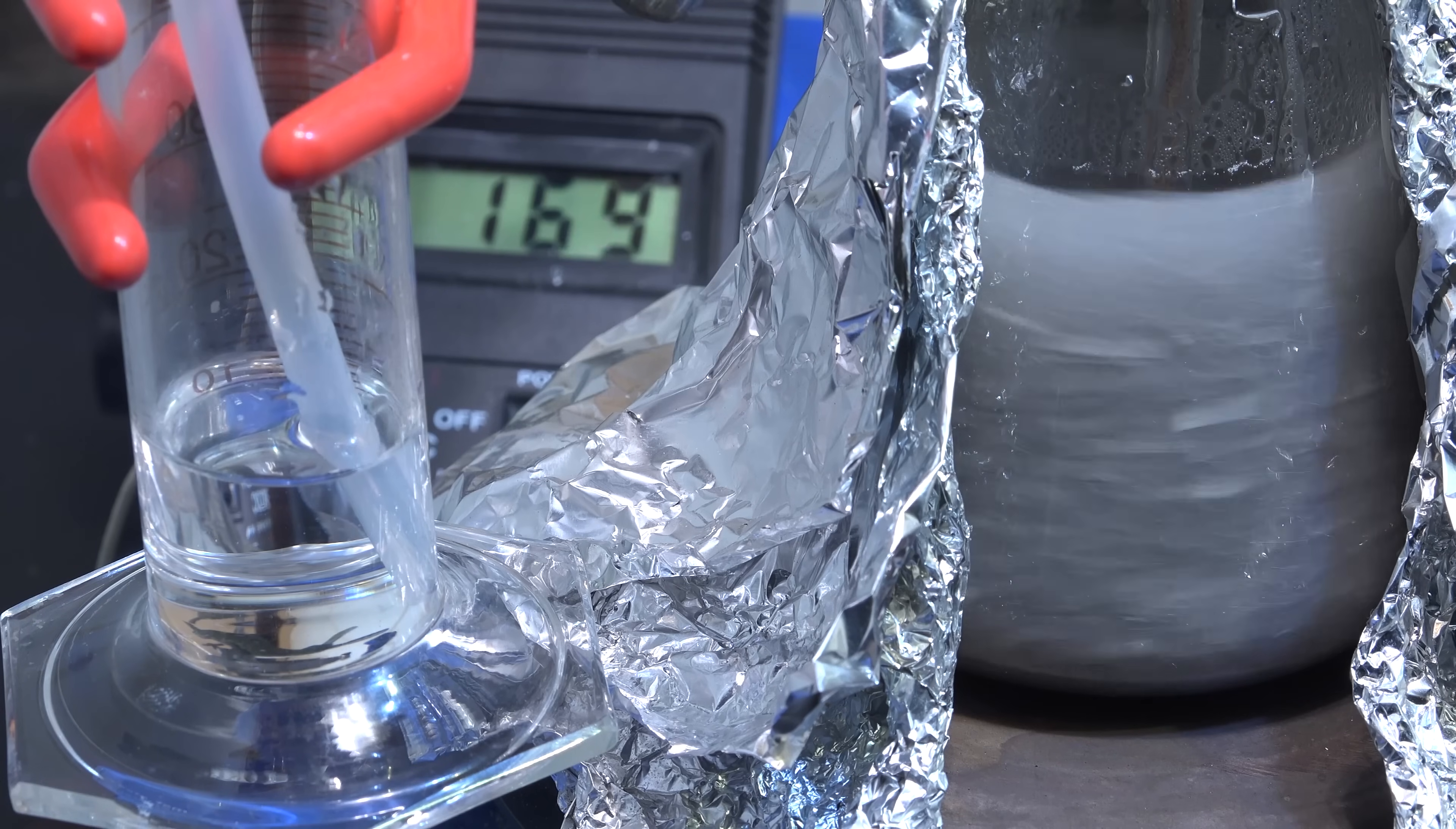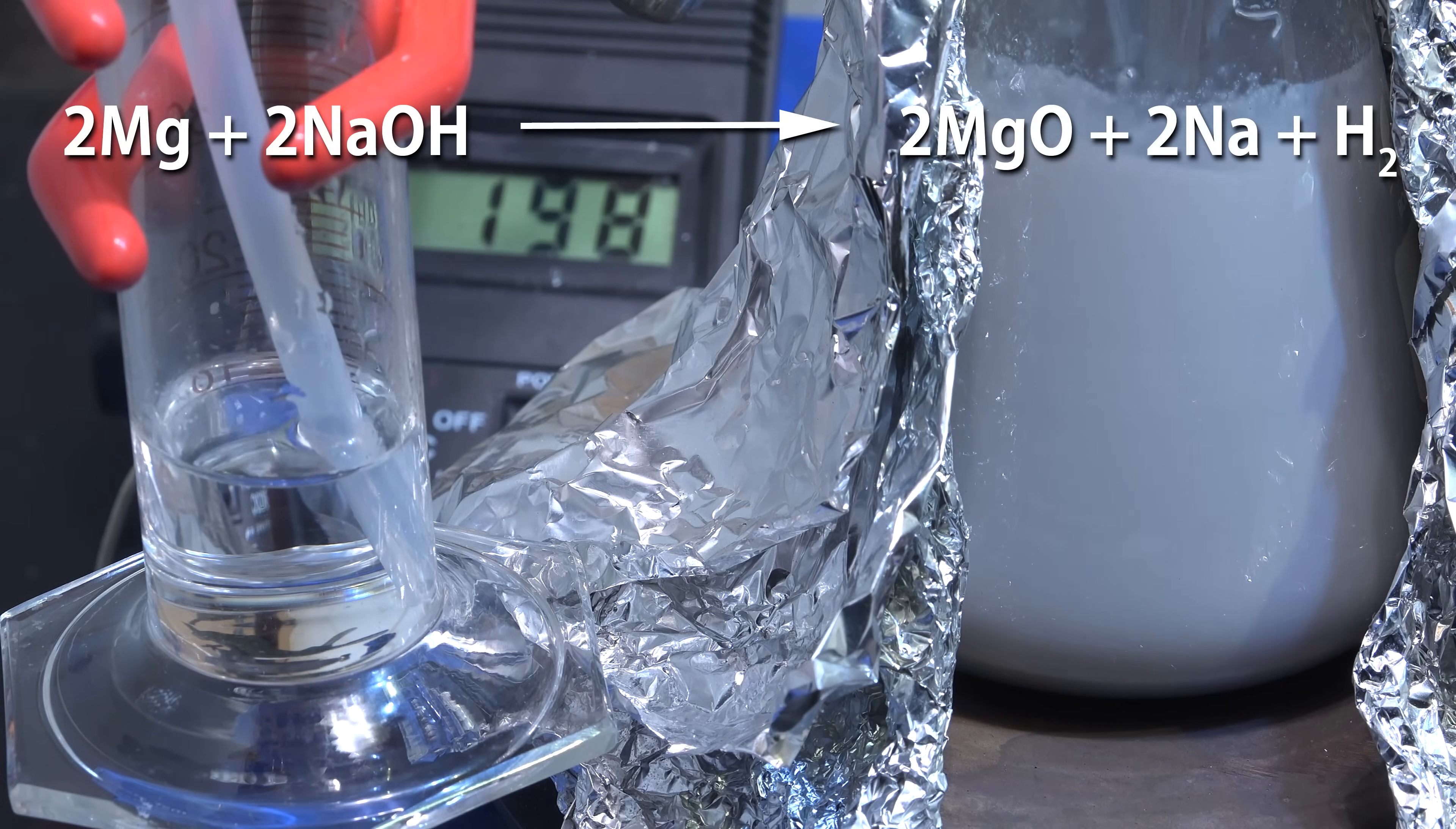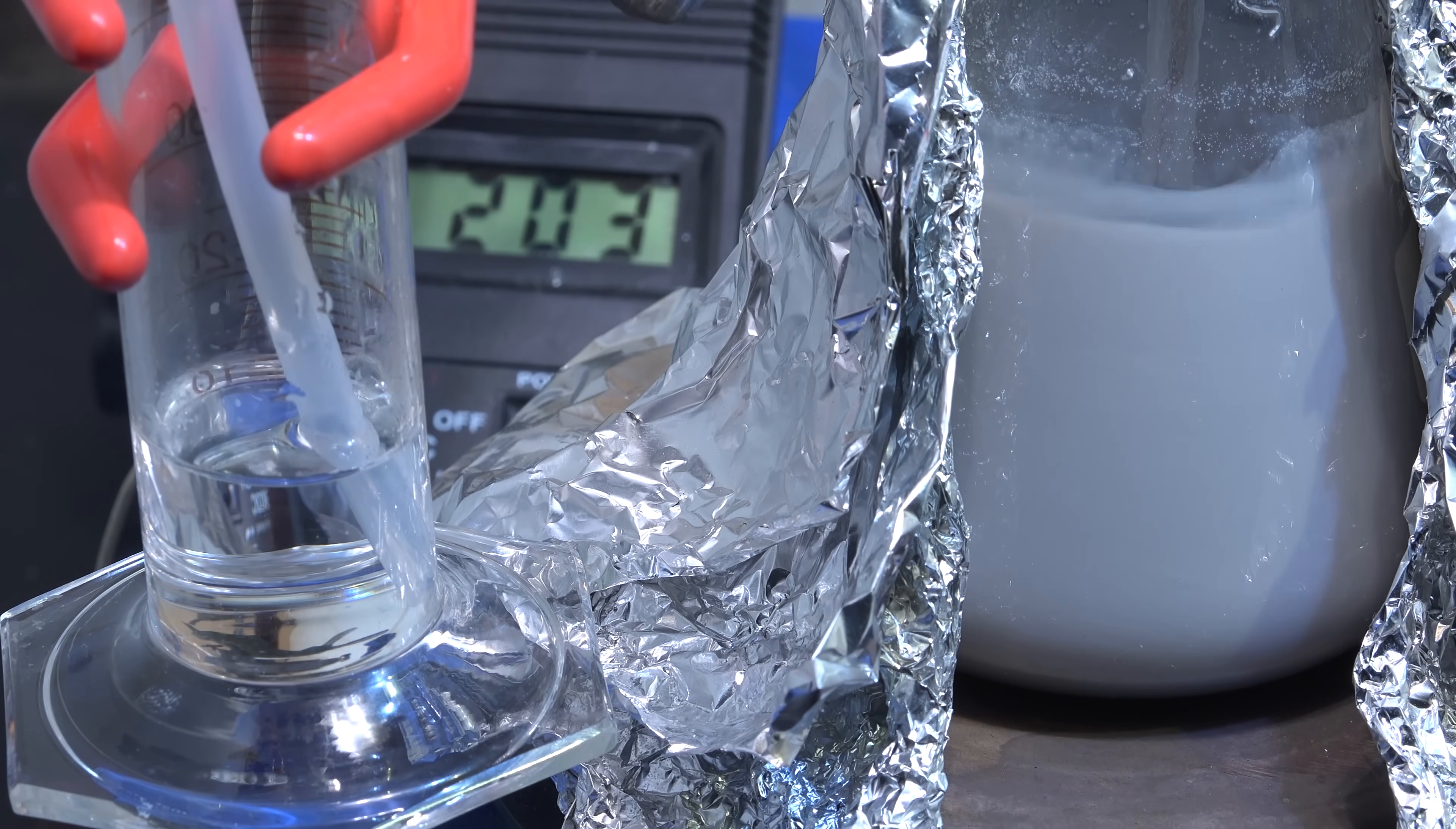Now raise the temperature to 200 celsius and hold it there. This is where we're actually making sodium. What's happening is the magnesium is reacting with the sodium hydroxide to produce magnesium oxide, sodium metal and hydrogen gas. This gas bubbles out and serves as an indication of our progress. You'll also see the reaction mixture turn into a slurry of magnesium oxide and liquid sodium as the reaction progresses.